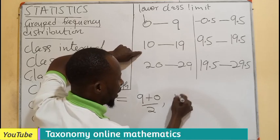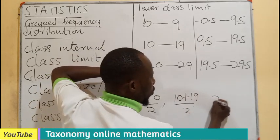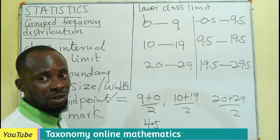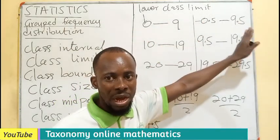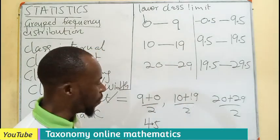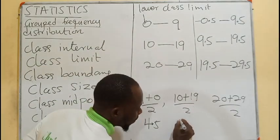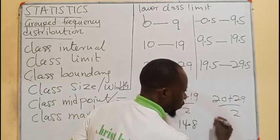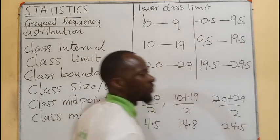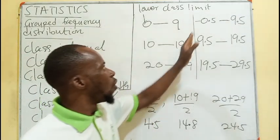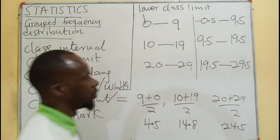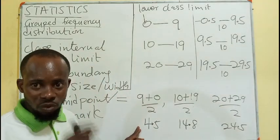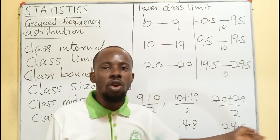So the midpoints are: (9 + 0) / 2 = 4.5, (10 + 19) / 2 = 14.5, and (20 + 29) / 2 = 24.5. Don't forget these will all be part of the table. One useful trick: once you know the class size — which we found to be 10 — the moment you know the first class midpoint, you can add the class size to generate all the remaining midpoints.